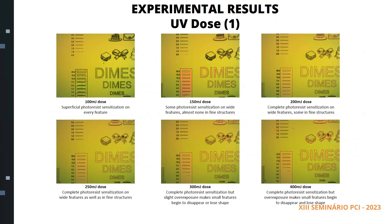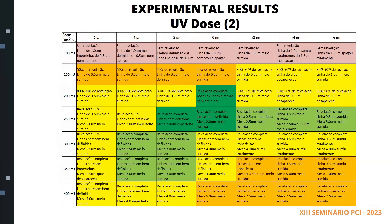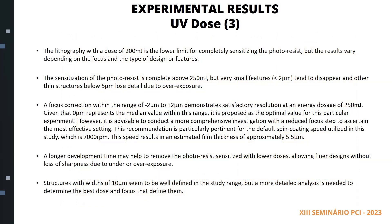In this slide, we can see some images of wafers exposed to different doses of UV light ranging from 100 to 400 mJ per square centimeter. The images show how the photoresist sensitization varies depending on the dose and the type of features on the design. We can see that lower doses result in superficial photoresist sensitization on every feature, while higher doses result in complete photoresist sensitization but also overexposure that makes small features begin to disappear or lose shape. In this slide, we can see a table that summarizes the results of Experiment 2 for different doses and focus corrections, showing the percentage of photoresist removal and the perceived quality of the photolithography for lines and rectangles on the wafers. We used a mask design with lines and rectangles of different widths ranging from 0.5 micrometers to 20 micrometers.